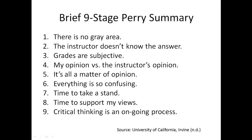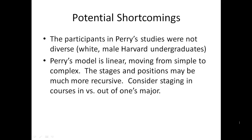That's a brief overview of four of the early stages of Perry's developmental process with regard to intellectual development in college students. Here's a summary slide from the University of California, Irvine, covering what we've discussed: no gray area, instructor doesn't know the answer, grays are subjective, and my opinion versus the instructor's opinion. There are other stages Perry has elucidated in his nine-stage approach. As with any theory, there are potential shortcomings I'll point to through resources at the end.